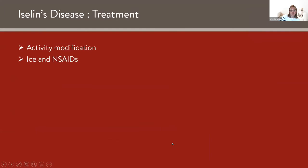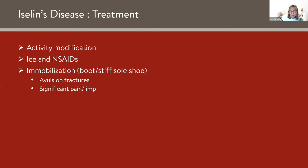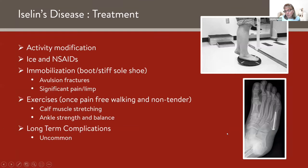If it's just inflammation and not an avulsion fracture, the treatment is activity modification. Kids who are really sore or have an avulsion fracture usually get a boot. For chronic cases, calf muscle strengthening and proprioceptive exercises can help. Also make sure shoes aren't too narrow, to avoid mechanical pressure on the area. Long-term complications are uncommon but do happen — I took care of a patient at Stanford whose apophysis never fused; when she was in college it was symptomatic and they ended up putting a screw across it. Very unusual, but it does occur.